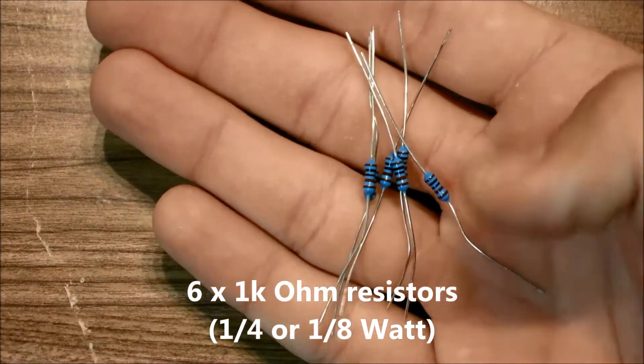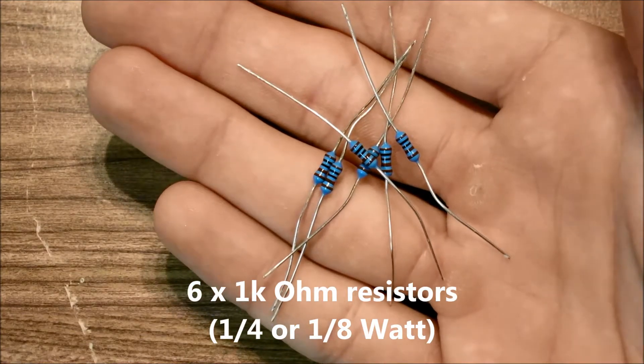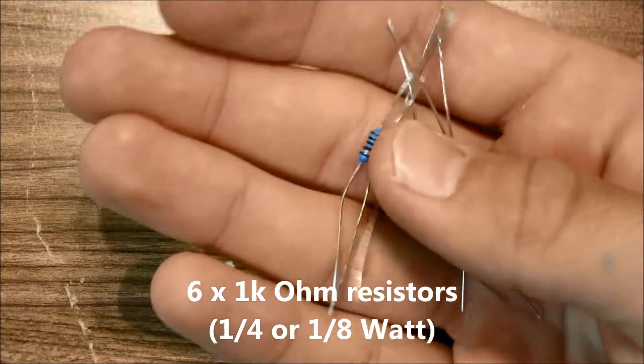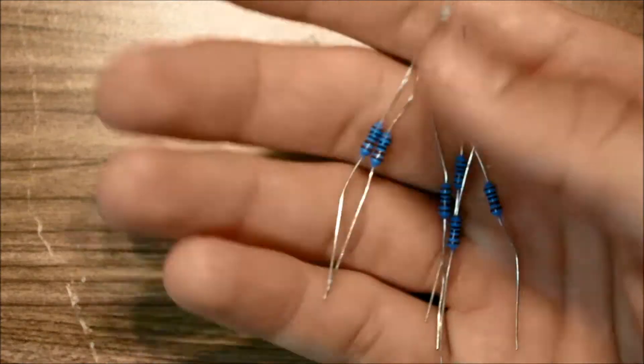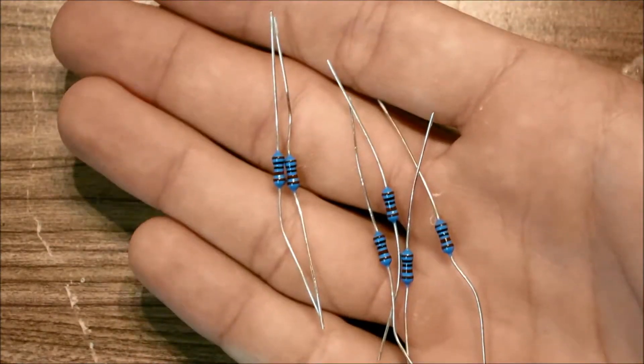You need 6, 1k ohm resistors and these could be either 1 quarter watt or 1 eighth of a watt, it doesn't matter. The 1 eighth of a watt resistors are a little bit smaller than this but you could use either type.